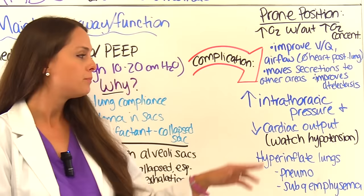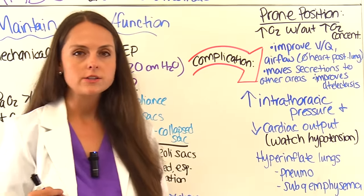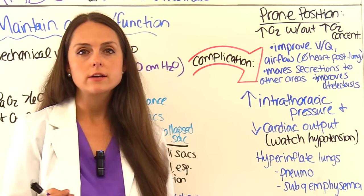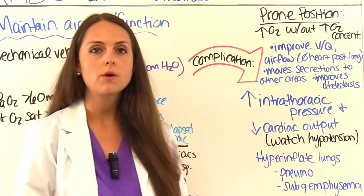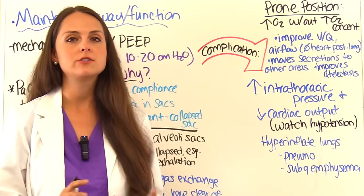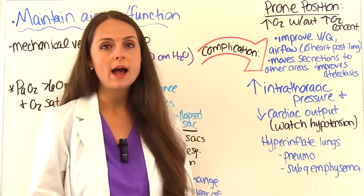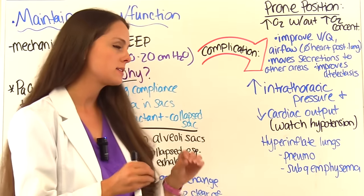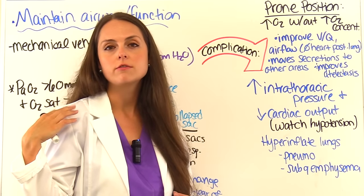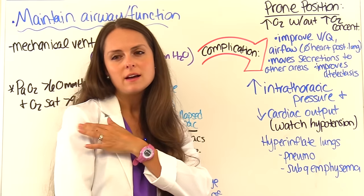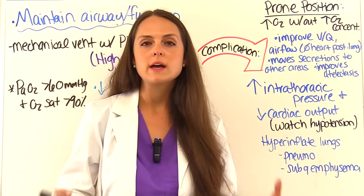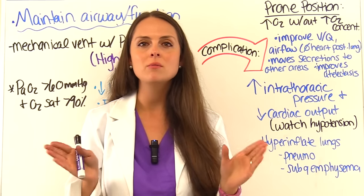Because PEEP pressures are so high, watch for complications. Increased intrathoracic pressure can compress the heart and decrease cardiac output — monitor blood pressure closely with hemodynamic monitoring. If hypotension develops, the physician may prescribe colloid solutions, crystalloids, or inotropic cardiac drugs like dobutamine to support cardiac contractility. Also watch for pneumothorax — lung collapse from hyperinflation — and subcutaneous emphysema, where air escapes the lungs into surrounding tissues and feels crunchy, like Rice Krispies, under the skin.